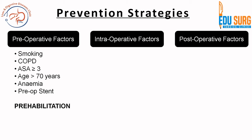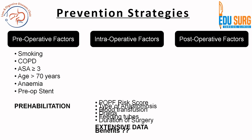Pre-operative prevention strategies are based on identified risk factors such as smoking, COPD, age greater than 70, anemia, and pre-operative stenting. Pre-habilitation measures include smoking cessation, COPD management, anemia correction, and avoidance of biliary stenting where possible. These pre-habilitation strategies can help in preventing delayed gastric emptying.